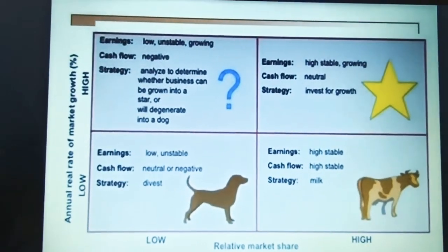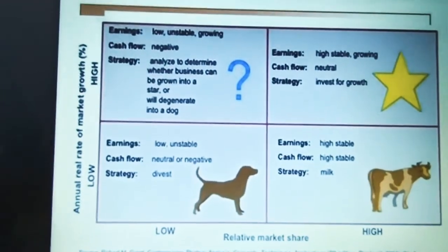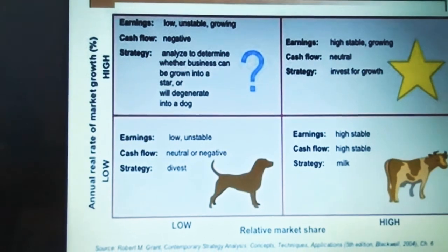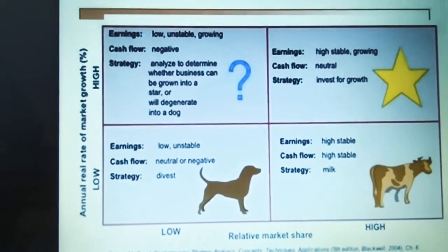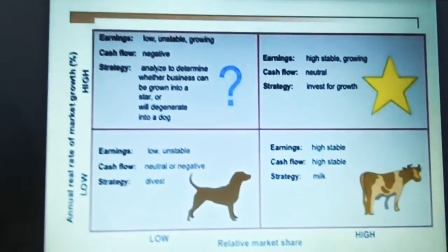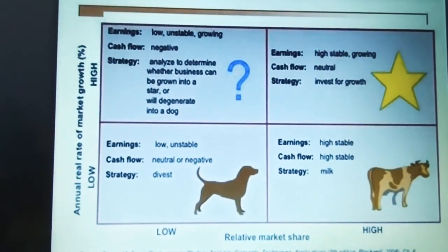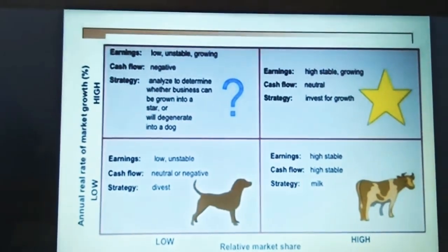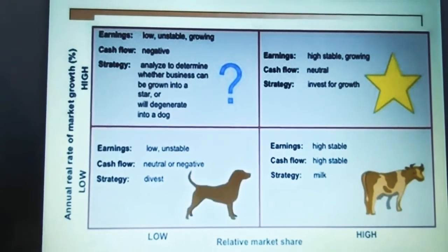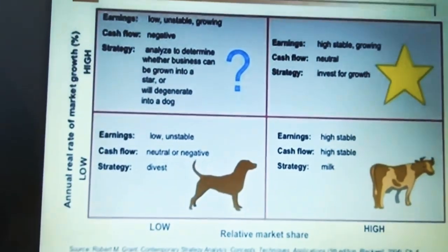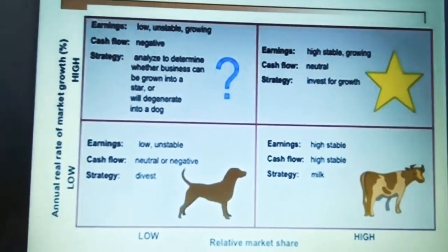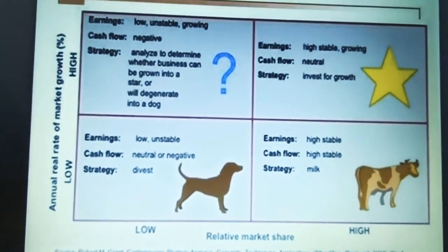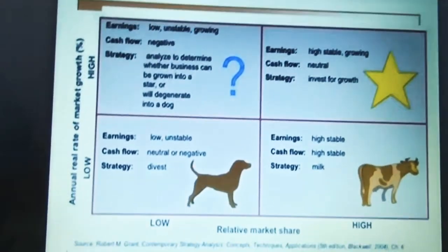Star means your product demand is there and market share is also there — your product is in the star category. In the cow category, you get enough profit margin at present, but in the future there are very few chances of continued profits. I suggest you do not take risks with cash cow products; instead, invest the cash generated from cow into the star or question mark categories to intensify demand and market share.